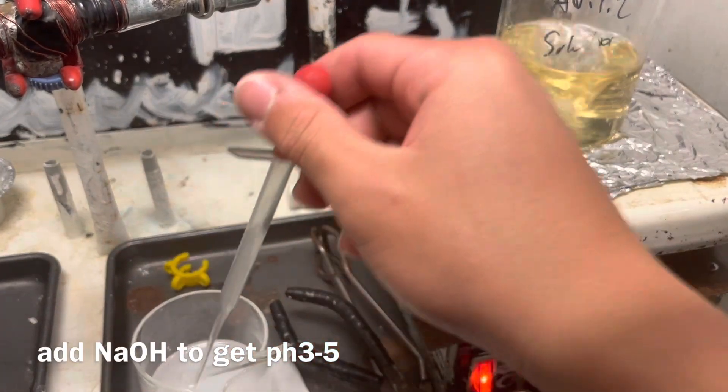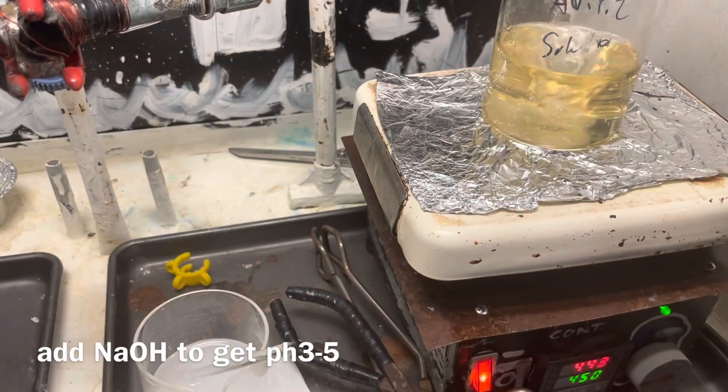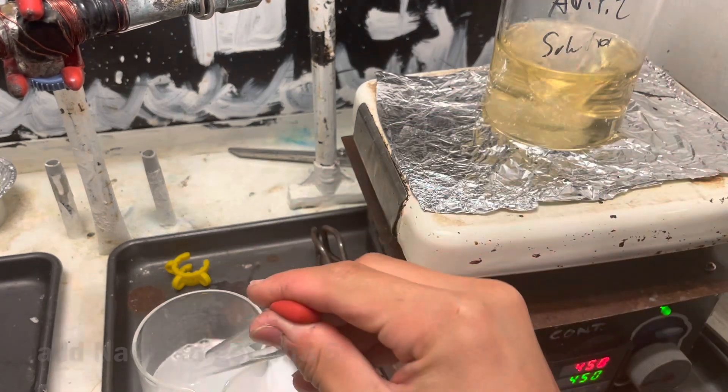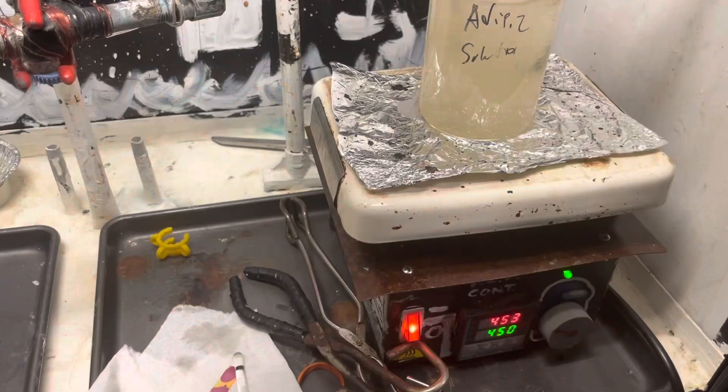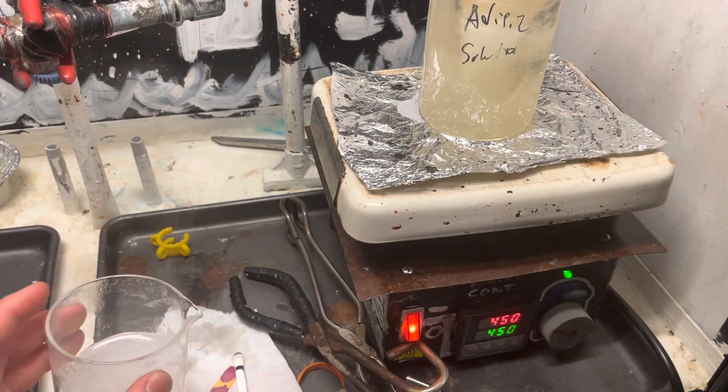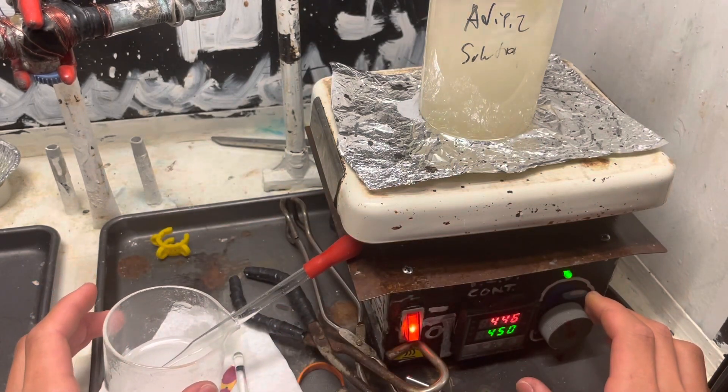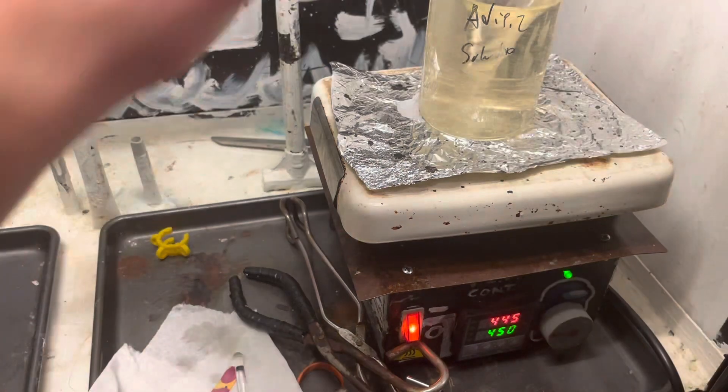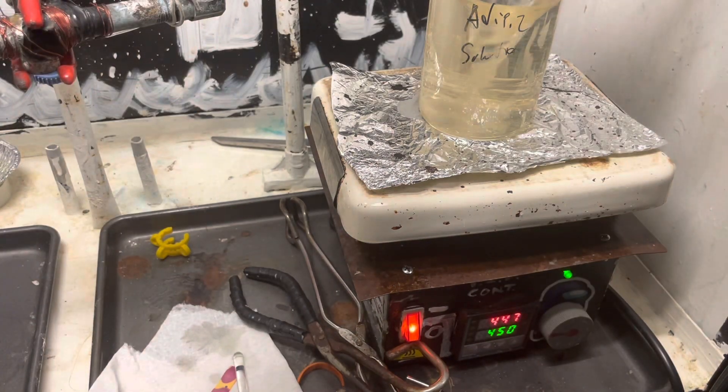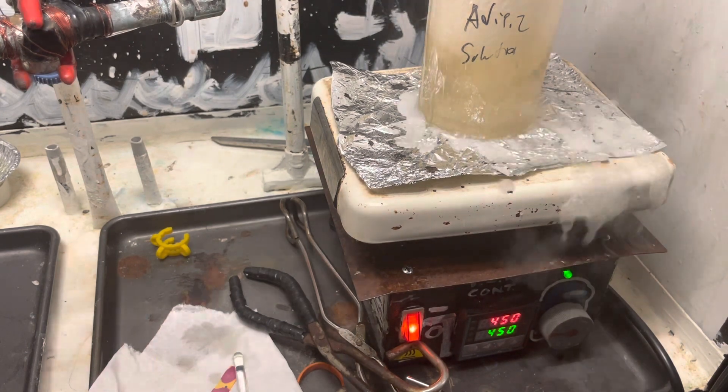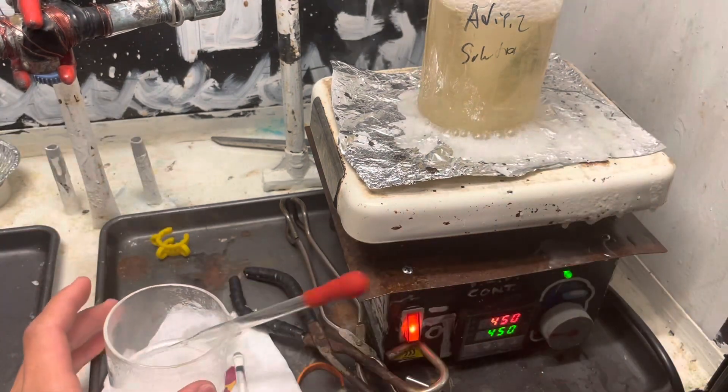Take your filtrate, and now neutralize it with sodium hydroxide to a pH of 3 to 5. The reason why we're aiming for this specific pH is because this pH seemed the best for the adipic acid to precipitate out, and also sodium sulfate, but still maintaining adipic acid in a non-ionized form, so it's not water-soluble. Well, more water-soluble than the salt.